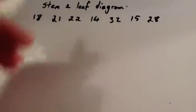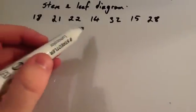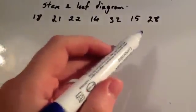Okay, we're now going to look at how to draw a stem and leaf diagram. So we've got a set of numbers: 18, 21, 22, 14, 32, 15, and 28.